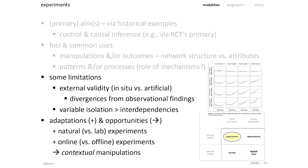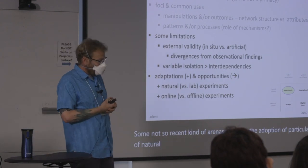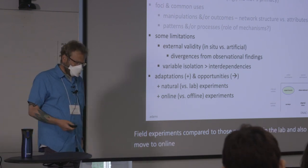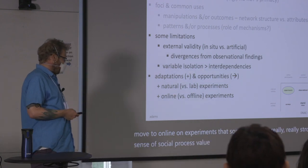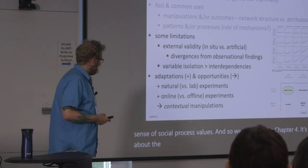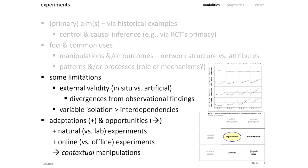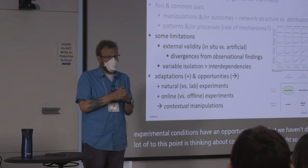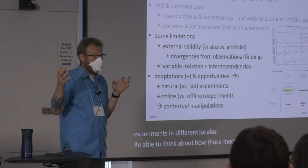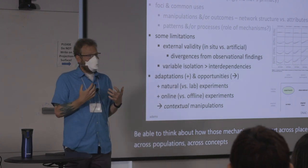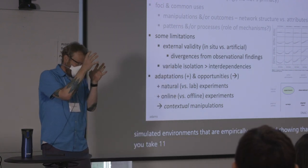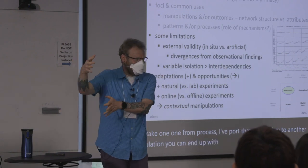This has led to some adaptations — the adoption of natural experiments or field experiments compared to those in a lab, and a move to online experiments that sometimes have really strong social process value. I would also suggest that experimental conditions have an opportunity to do something we haven't done a lot of: thinking about contextual variation — doing experiments in different locales to think about how mechanisms transport across places, populations, and contexts. I've done some of this in simulated environments seeded empirically, showing that porting a mechanism to another population can produce entirely different outcomes due to initial composition and structure.